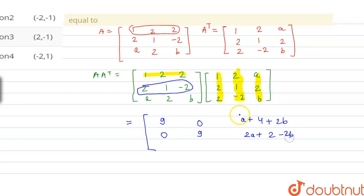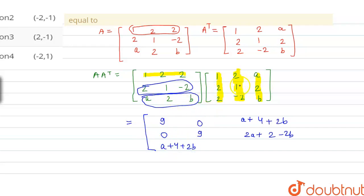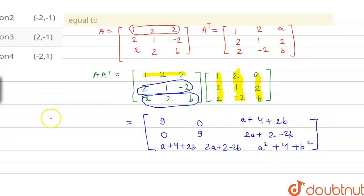The last entries come from row 3 (A, 2, B) multiplied with the three columns. Row 3 with column 1 gives A + 4 + 2B. Row 3 with column 2 gives 2A + 2 − 2B. Row 3 with column 3 gives A² + 4 + B². And this result is equal to 9 into I, as given in the question.